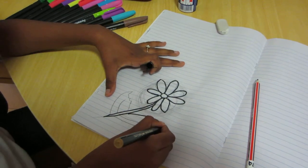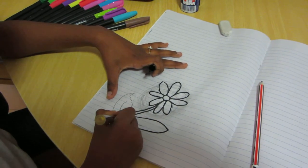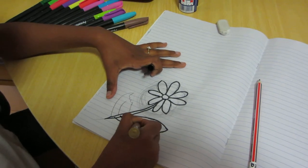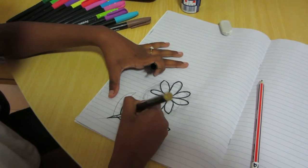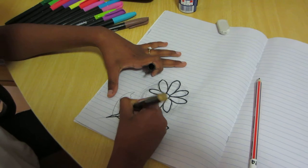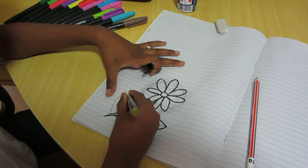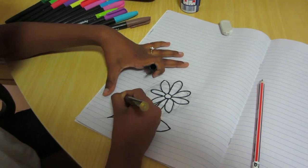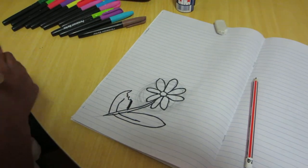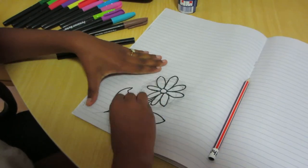Now draw the leaves, just like that. Now we're going to erase the extra guidelines.